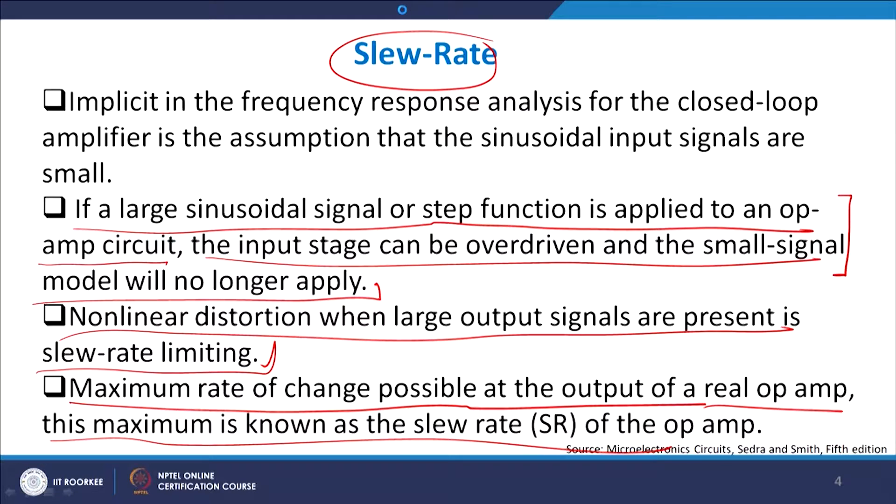The reason there is a maximum is that the variation of voltage with respect to time — at input or output — is always governed by the RC time constant at that particular node. So you cannot expect that if you give a step input voltage, the same response will appear instantly at the output. It will always be delayed by the RC time constant. If you make the rate of change larger than the slew rate, the op-amp cannot sustain it — this is a slew-rate-limited output.